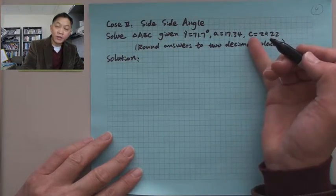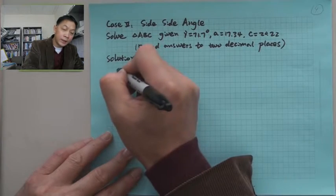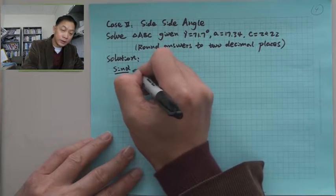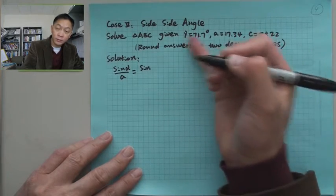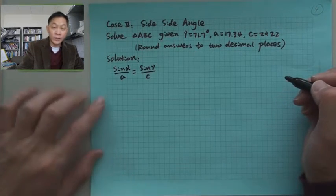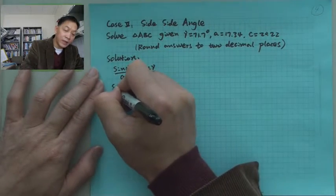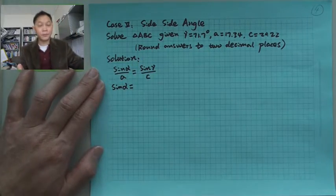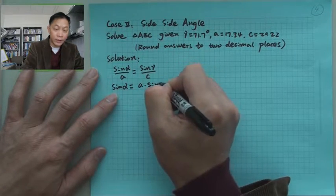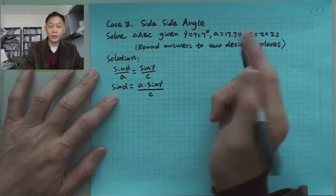Here we have a C, we have a gamma. So then we need to find out sine alpha. And sine alpha over A, alpha always goes with A, equals sine gamma over C. Now what we need is sine alpha. If we have sine alpha, then we know alpha. So then sine alpha is A times sine gamma over C.